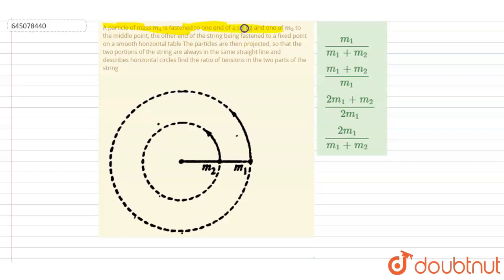Another point of the string is being fixed on a smooth horizontal table, and the particles are projected so that the two portions of the strings are always on the same straight line and describe the horizontal circle.